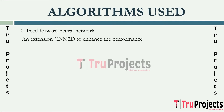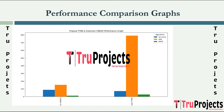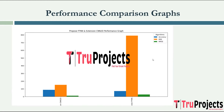As an extension, CNN 2D is used to enhance performance. We have used accuracy, MSE, and RMSE as the error metrics to evaluate all models built in the project. In the performance graph, the blue color represents accuracy, orange color represents MSE, and green color represents RMSE.